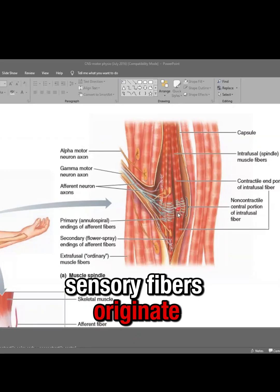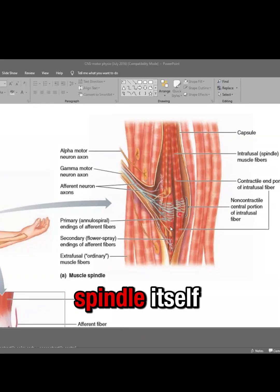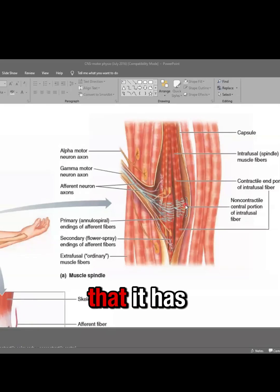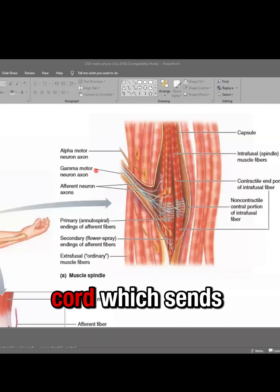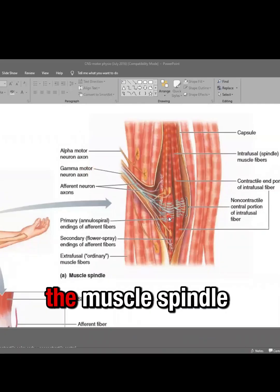Sensory fibers originate from the receptor. The receptor in this case is the muscle spindle itself, the various intrafusal fibers that it has. And motor component means the output of the motor anterior motor neuron in the spinal cord, which sends out the motor axon and it enters the muscle spindle.